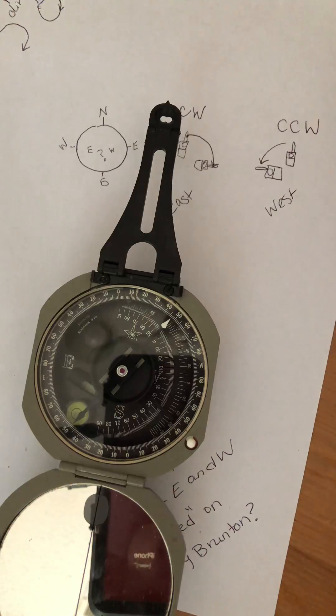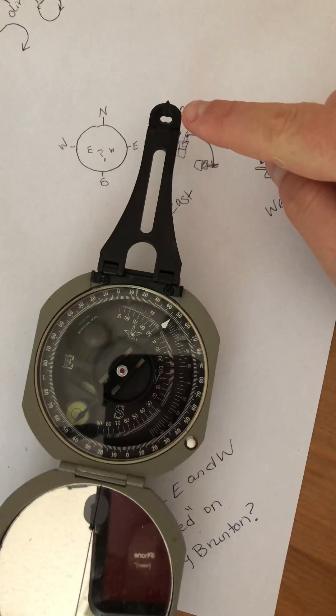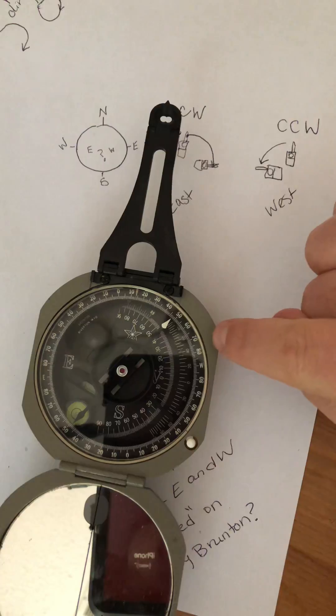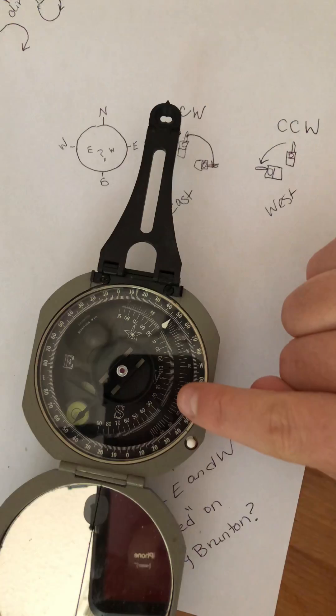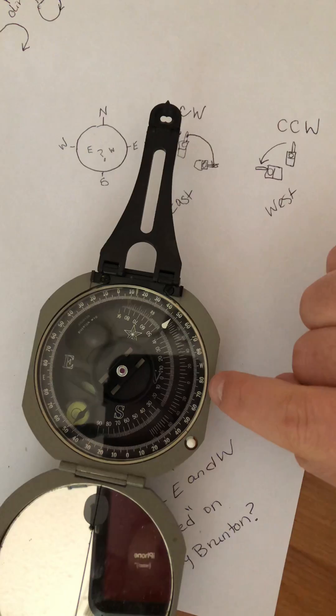So now my needle is still pointing north, but my compass is pointing northwest. So in order to have the accurate reading or the correct reading off of this, west needed to be on my Brunton written to the right or to the clockwise direction of north.